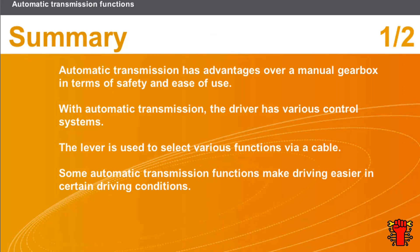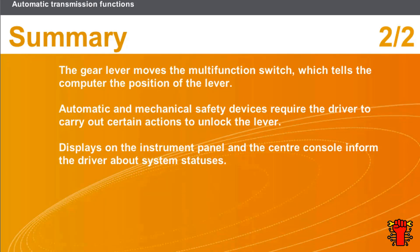In this section we covered the following points: automatic transmission has certain advantages over a manual gearbox in terms of safety and ease of use; the driver has various control systems; the lever selects various functions via a cable; some functions make driving easier in certain conditions; the gear lever moves the multifunction switch; automatic and mechanical safety devices require certain actions to unlock the lever; and displays on the instrument panel and centre console inform the driver about system statuses.